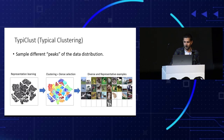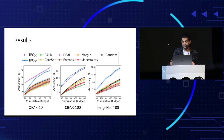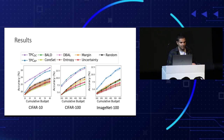Now let's look at some results. In purple and blue you see our method, TP-CLUST, with two variants that differ in the clustering algorithm they use. All other active learning methods are worse than or on par with random, because these are low-budget experiments — the number of examples is one sample per class. Our method, TP-CLUST, outperforms random selection and all other active learning strategies, and is able to overcome the cold start problem.